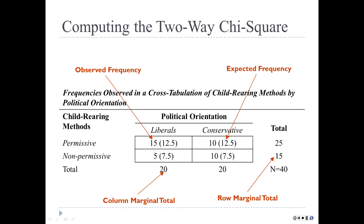A quick terminology note: in tables you sometimes see numbers in parentheses—in the chi-square context these are often the expected frequencies. The margin totals are the row and column totals in the margins, calculated by adding up the actual values.